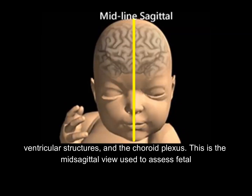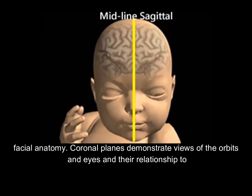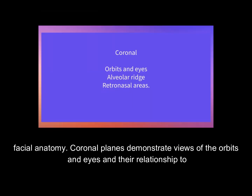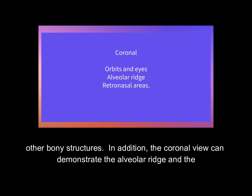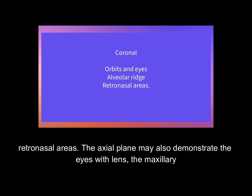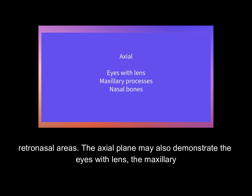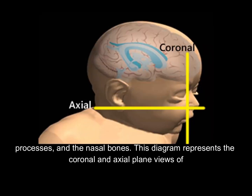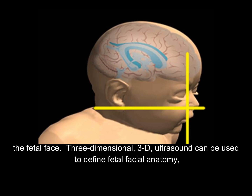This is the midsagittal view used to assess fetal facial anatomy. Coronal planes demonstrate views of the orbits and eyes and their relationship to other bony structures. In addition, the coronal view can demonstrate the alveolar ridge and the retronasal areas. The axial plane may also demonstrate the eyes with lens, the maxillary processes, and the nasal bones. This diagram represents the coronal and axial plane views of the fetal face.